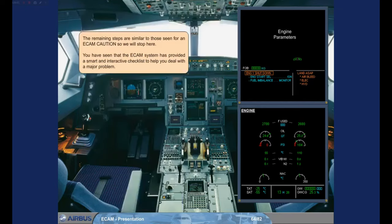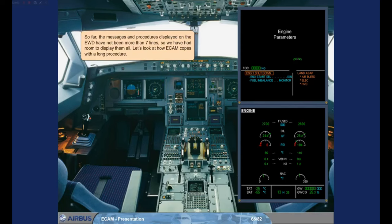The remaining steps are similar to those seen for an ECAM caution, so we will stop here. You have seen that the ECAM system has provided a smart and interactive checklist to help you deal with a major problem. So far, the messages and procedures displayed on the Engine Warning Display have not been more than seven lines, so we have had room to display them all.